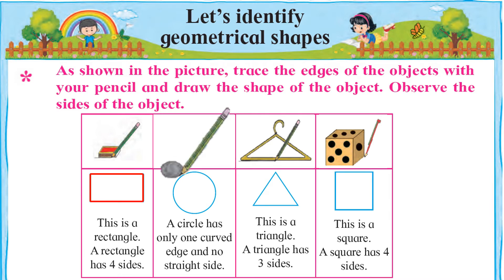Yeh hai coin ki picture. Coin ke edges yaani kinaaron par pencil pherne par aapko is tarah ka shape banta nazar aayega. This is a circle — ise Urdu mein Daaira kehte hain. A circle has only one curved edge and no straight side. Circle yaani Daaira ko sirf ek khamdar kinaara hota hai aur isme ek bhi seedhi baazu nahin hoti. Yeh hai circle ka one curved edge.